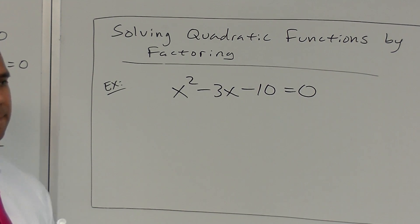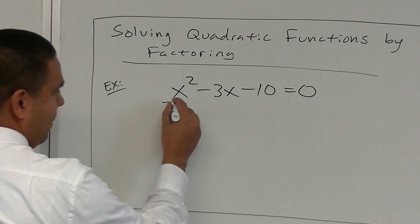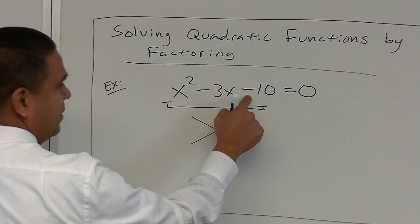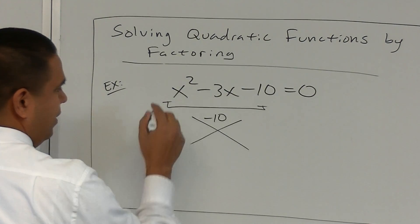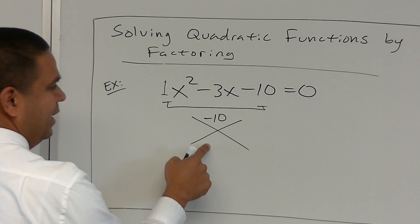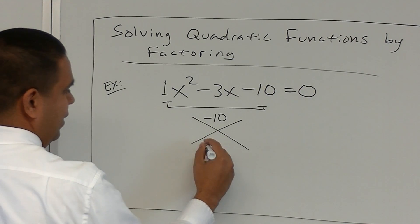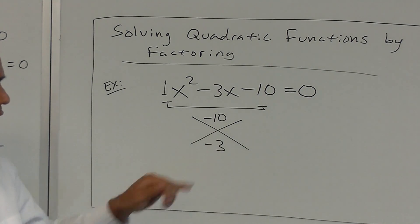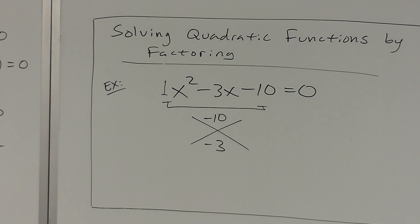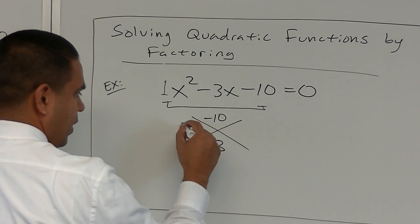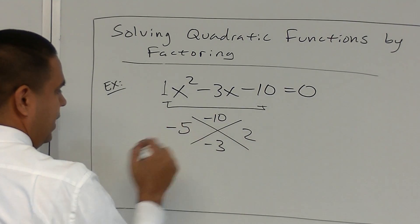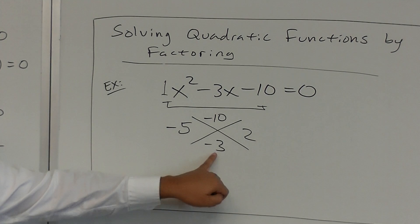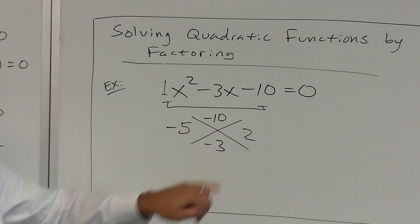Just like we've been practicing from Chapter 8, we need to factor this. We do 1 times negative 10 — that's negative 10 — and what adds to negative 3? Two numbers: negative 5 and 2. The 5 has to be negative. Negative 5 plus 2 is negative 3, and negative 5 times 2 is negative 10. So we simply divide by the leading coefficient of 1.